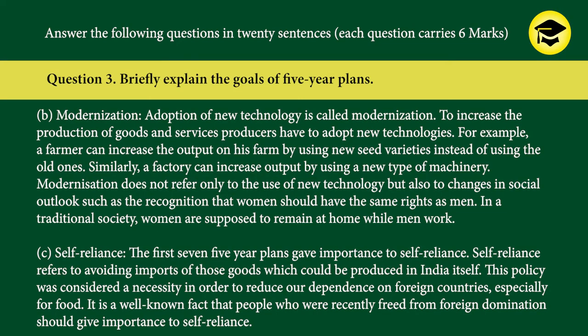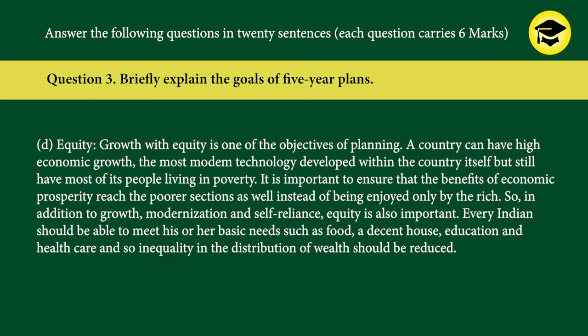C) Self-reliance: The first seven five-year plans gave importance to self-reliance. Self-reliance refers to avoiding imports of those goods which could be produced in India itself. This policy was considered a necessity to reduce our dependence on foreign countries, especially for food. It is a well-known fact that people who were recently freed from foreign domination should give importance to self-reliance.